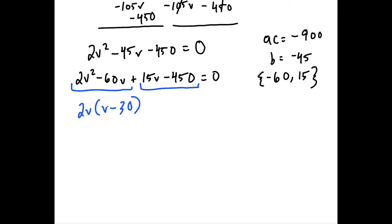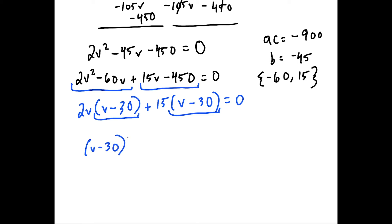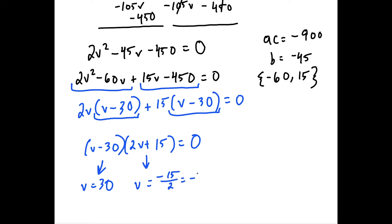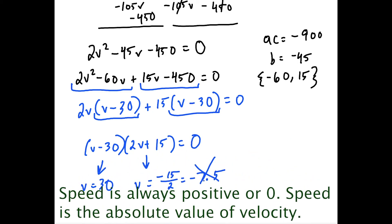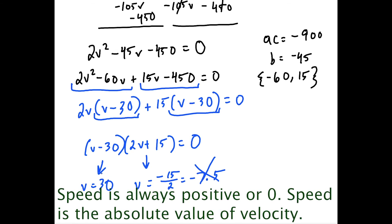We factor by grouping. From the first two terms, we factor out 2V, leaving (V minus 30). From the last two terms, we factor out 15, also leaving (V minus 30). Factoring out (V minus 30) gives (V minus 30)(2V plus 15) equals zero. Setting each factor to zero: the first gives V equals 30, and the second gives V equals negative 15 over 2, or negative 7.5. Since Hank isn't driving backwards, we reject the negative solution and take V equals 30.